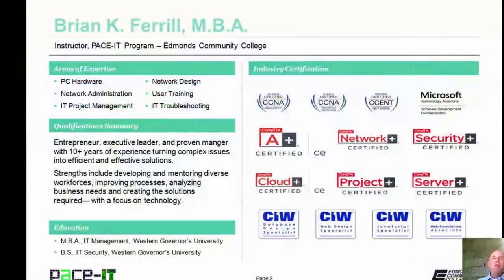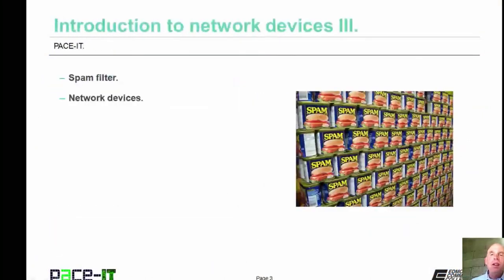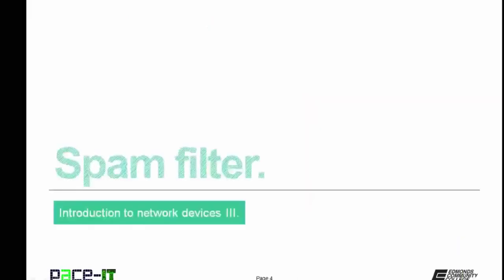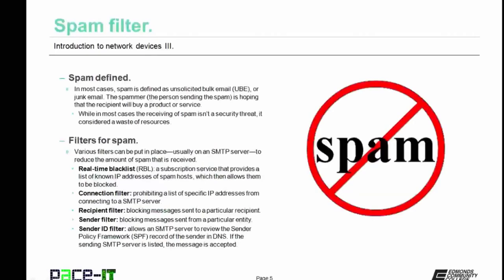Hello, I'm Brian Farrell, and welcome to Pace IT's session on introduction to network devices, part three. Today I'm going to be talking about spam filters, and then we're going to conclude with a brief discussion on some network devices. I'm going to begin by talking about the spam filter. In most cases, spam is defined as unsolicited bulk email, or UBE, or sometimes it's called junk mail. The spammer is hoping that the recipient will buy a product or service.